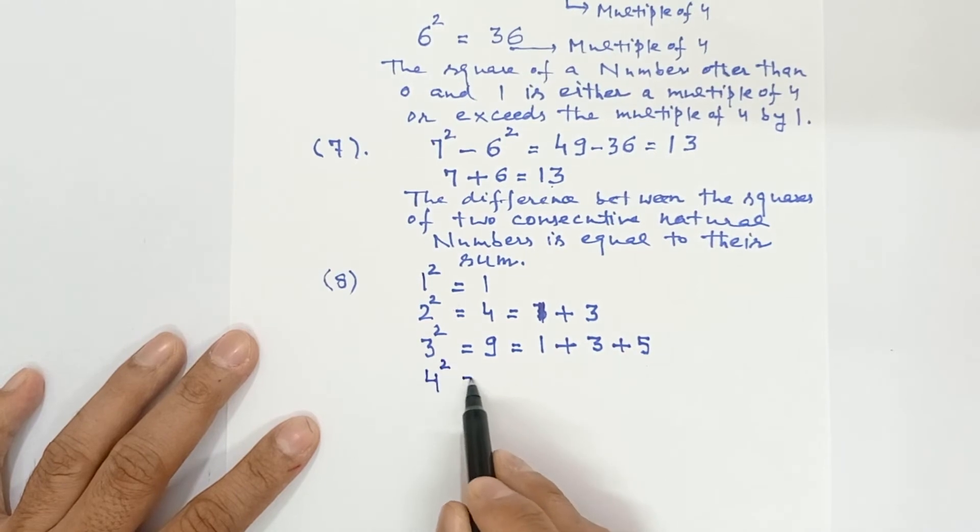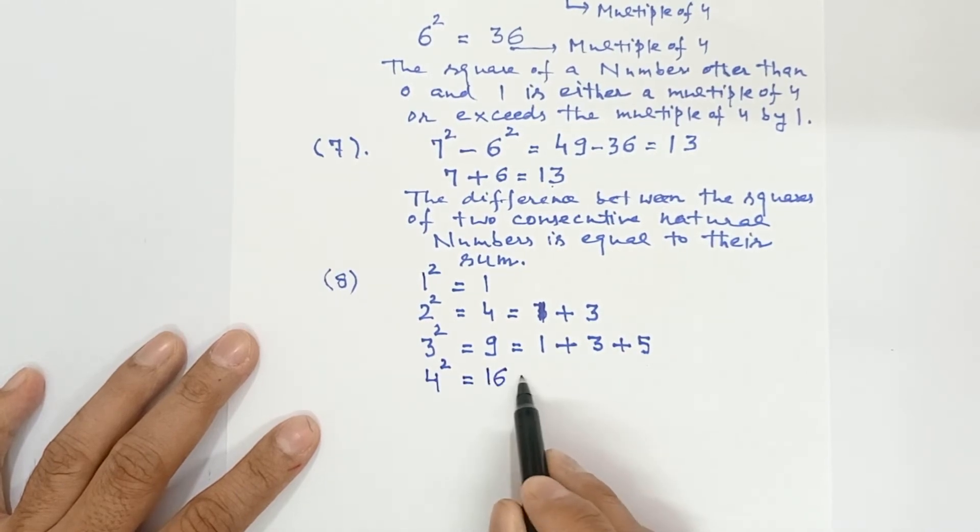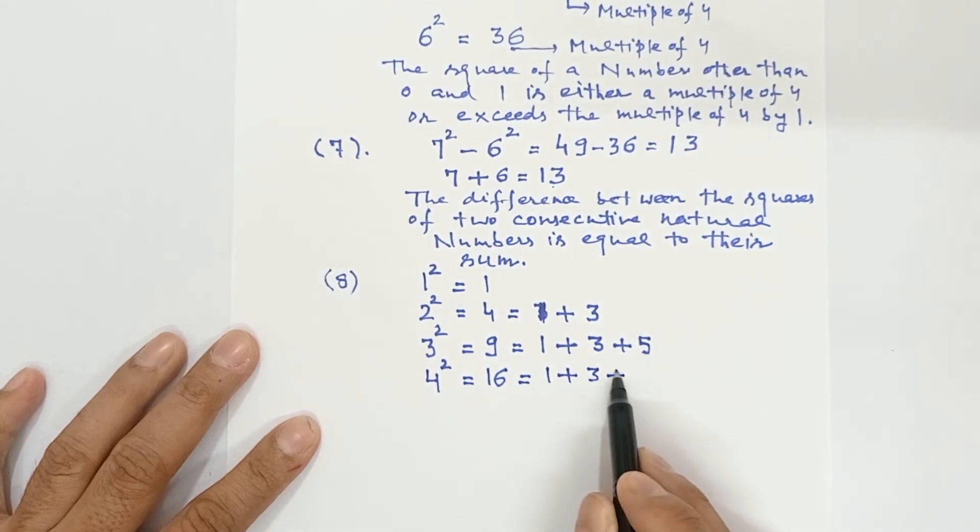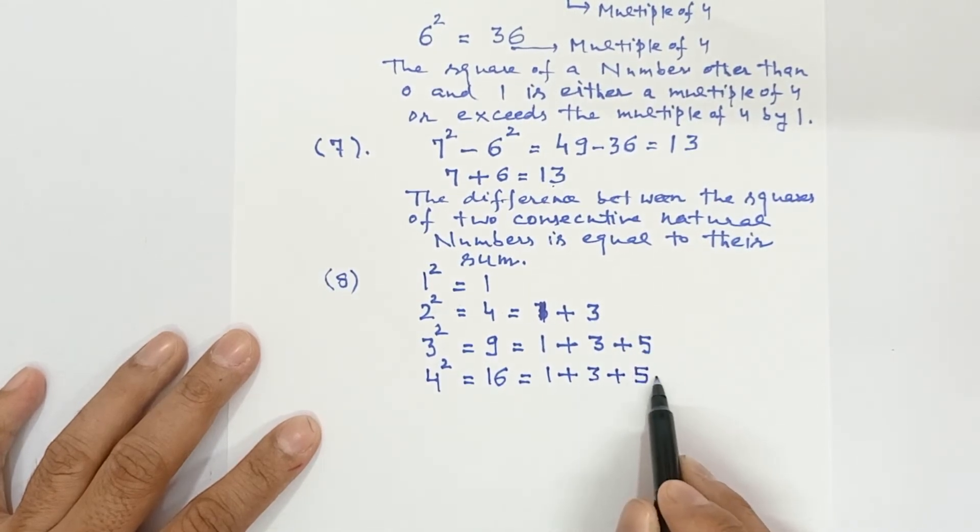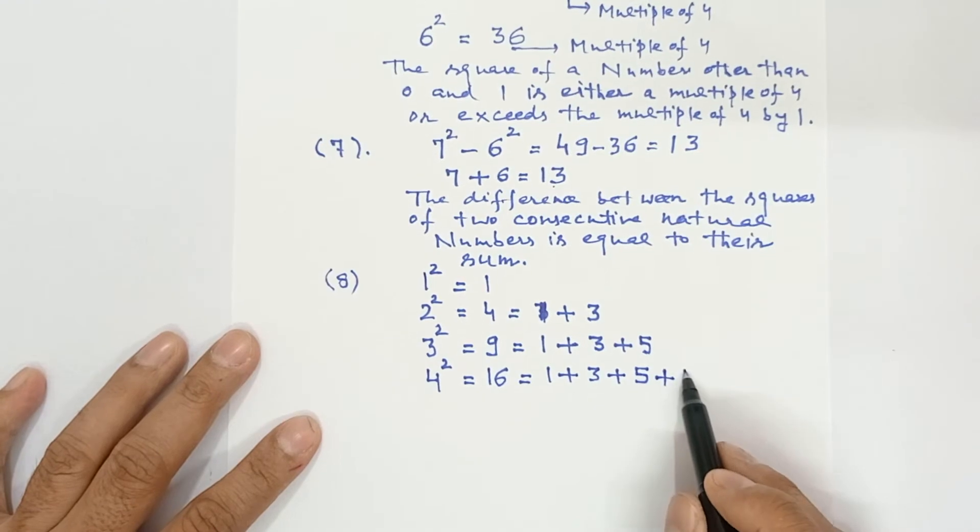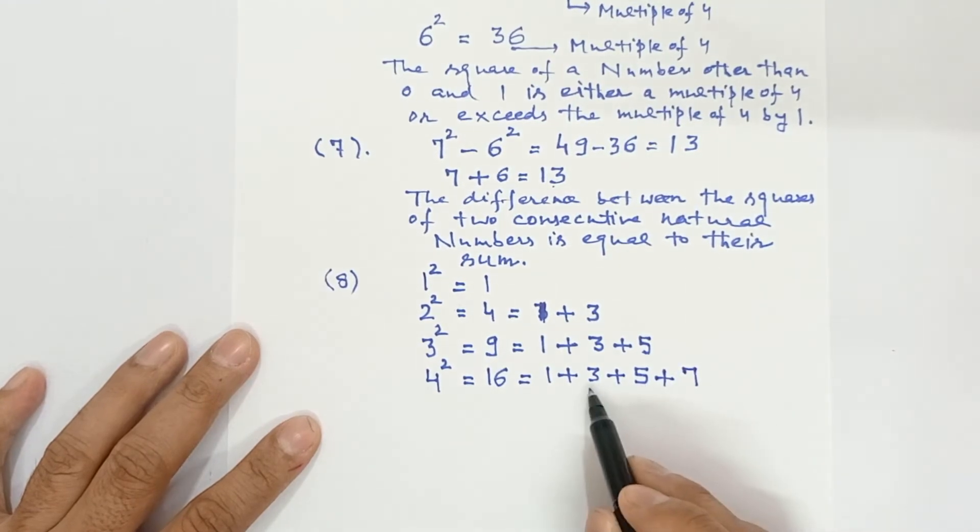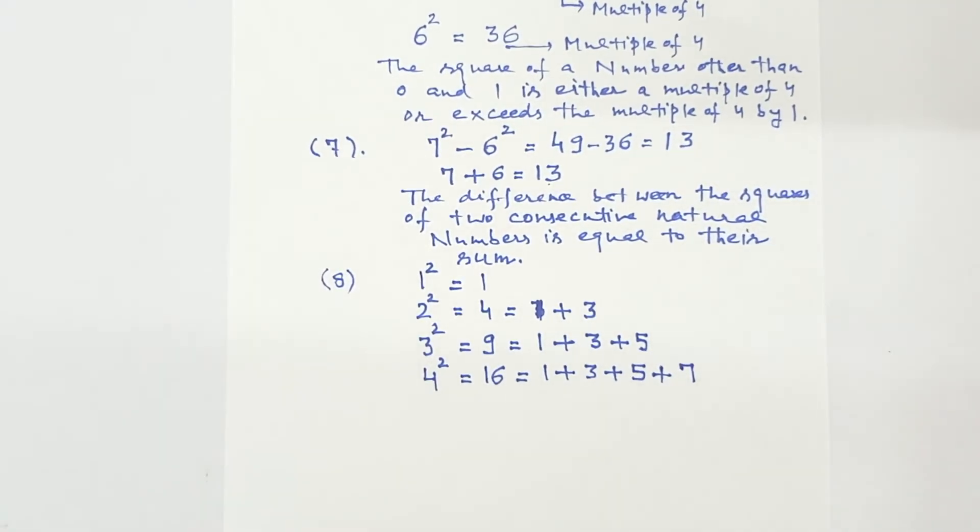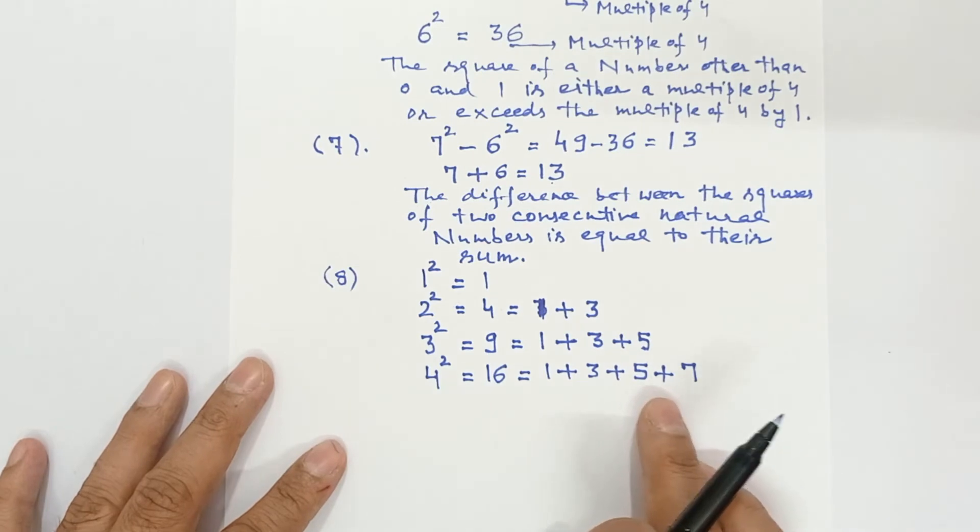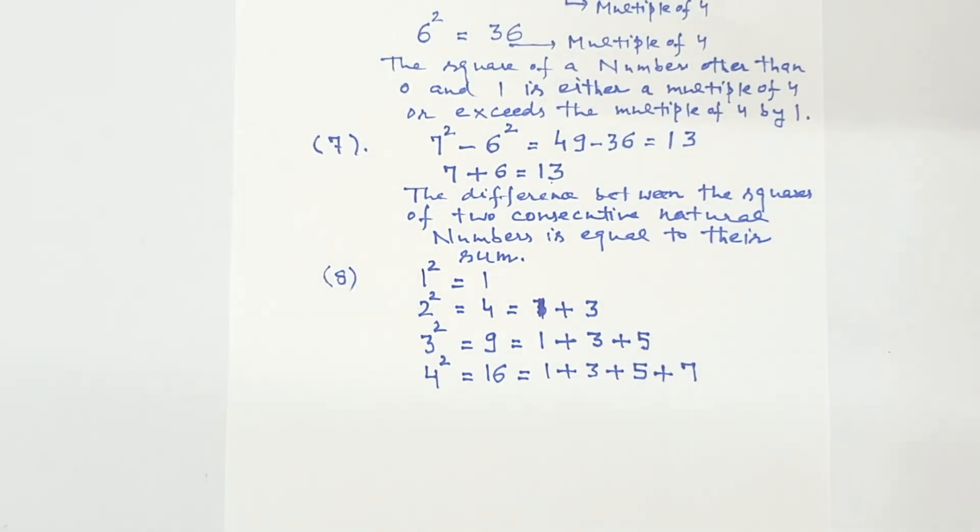I take 4. 4 square is equal to 16. First odd number 1, second is 3, third is 5, and fourth is 7. 7 plus 5 is 12, plus 3 is 15, plus 1 is 16. Similarly, if I square the 5 square, it will be the sum of first 5 odd numbers.